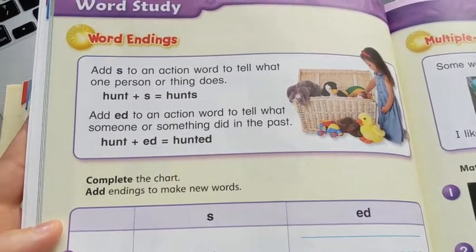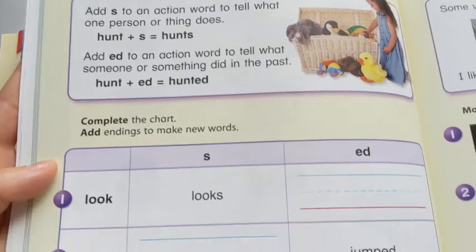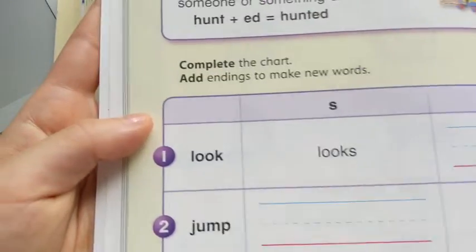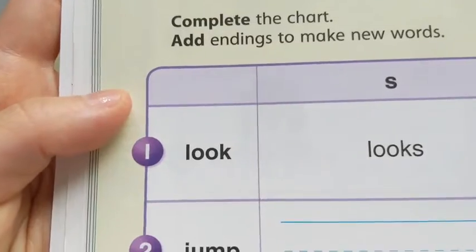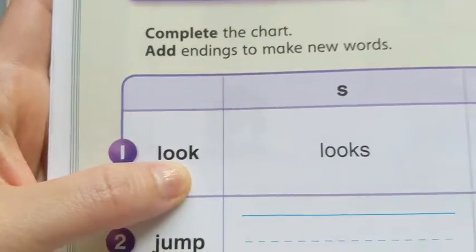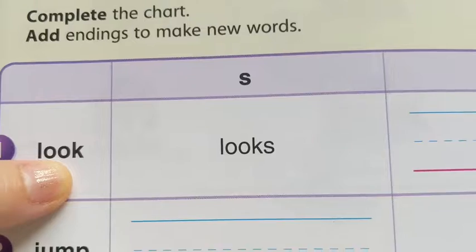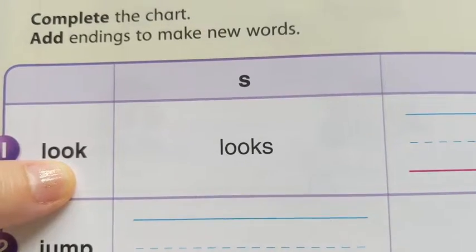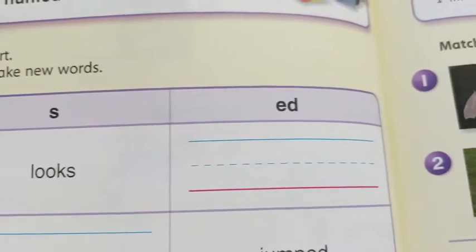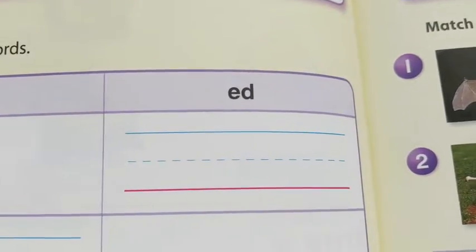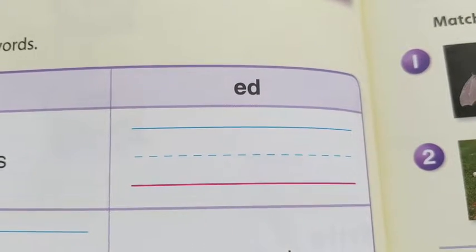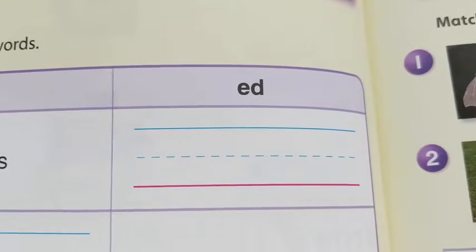All you need to do today is to complete this chart. Take the verb 'look' and you're going to add the S to make a new word — looks. And then you're going to take the word 'look' and add the ED and make it say 'looked.'